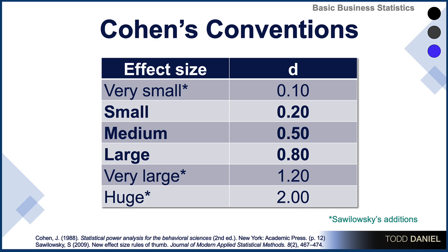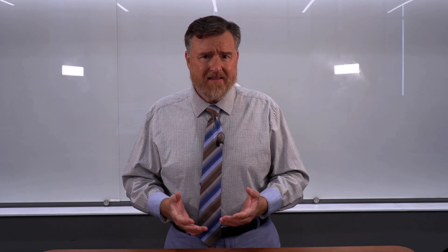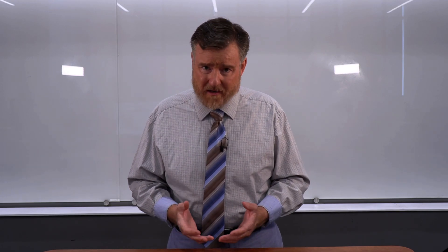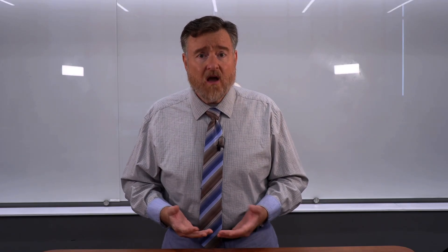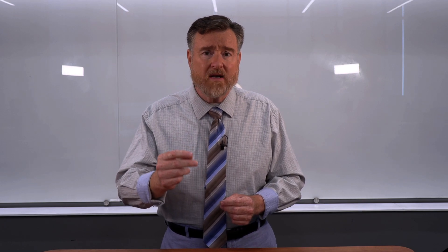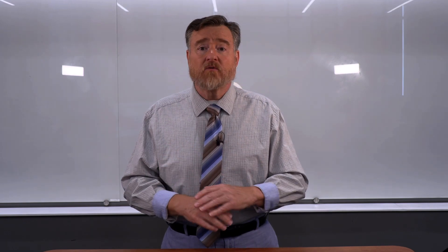Sowoloski has added a very small effect size of 0.1, effect sizes of 1.2 are very large, and if your effect size is 2 or larger, that is a huge effect size. You might wonder where these conventions come from — that 0.2 and 0.5 seems a little arbitrary. And in fact, Jacob Cohen would agree: he wrote that all conventions are arbitrary, and one can only demand that they not be unreasonable. We're not going to quibble between an effect size of 0.49 and 0.5. We're just going to report effect sizes for what they are. These conventions give us guidelines to help understand what those effect sizes mean.